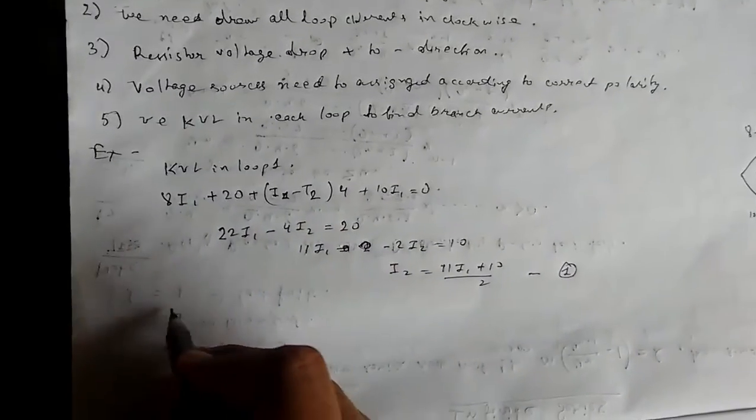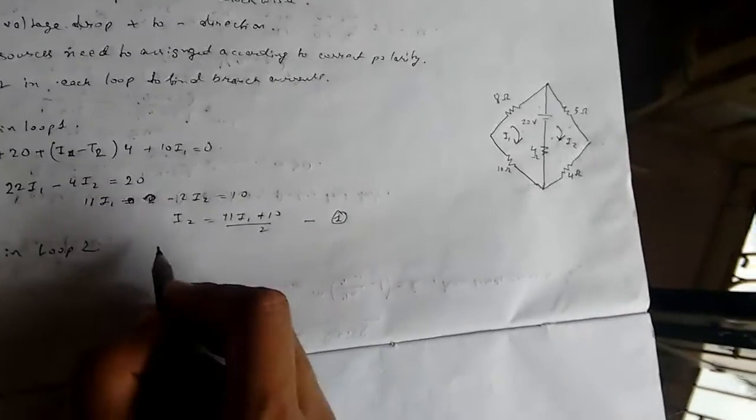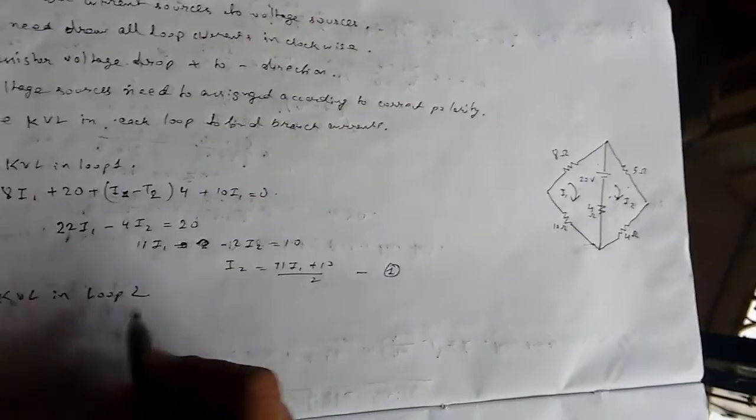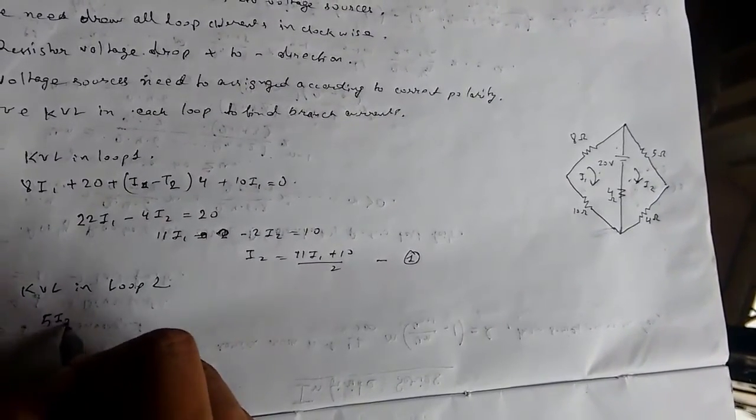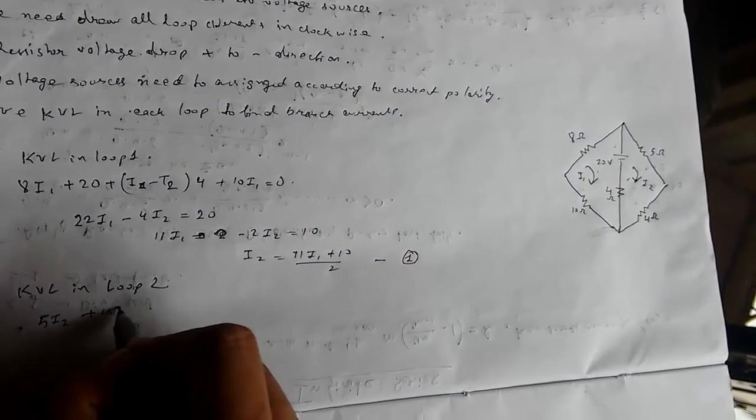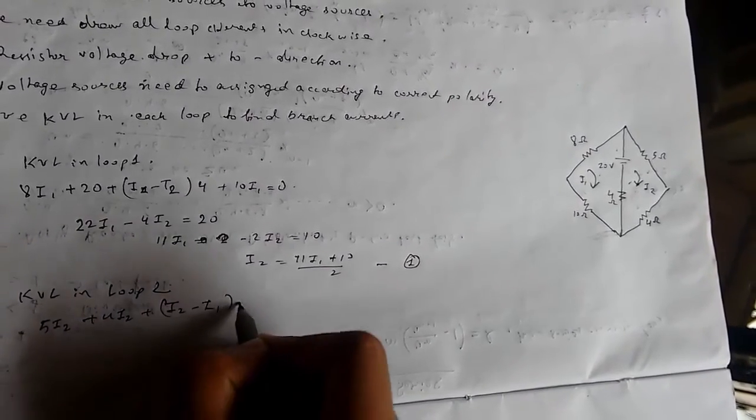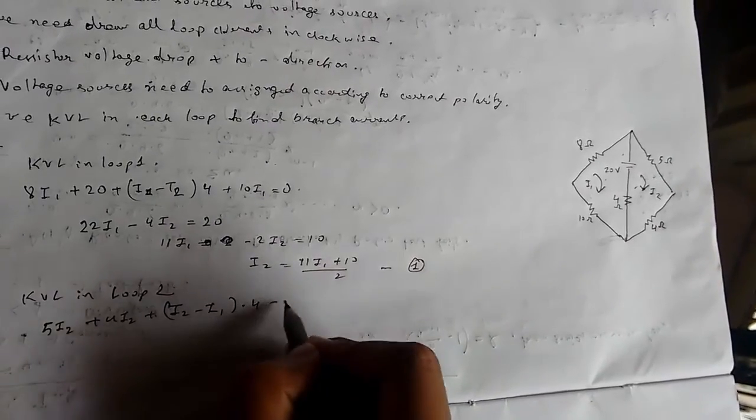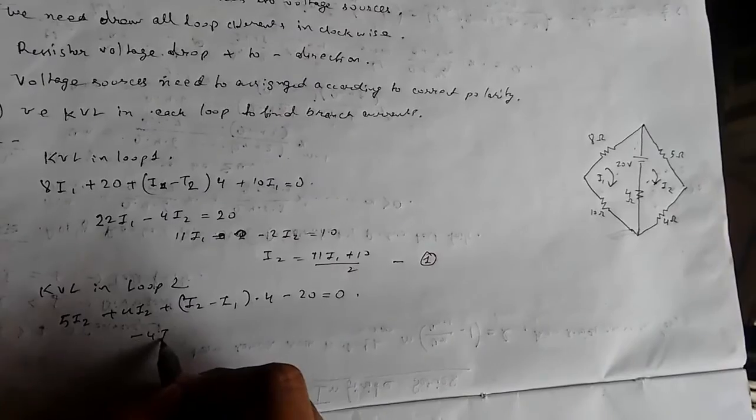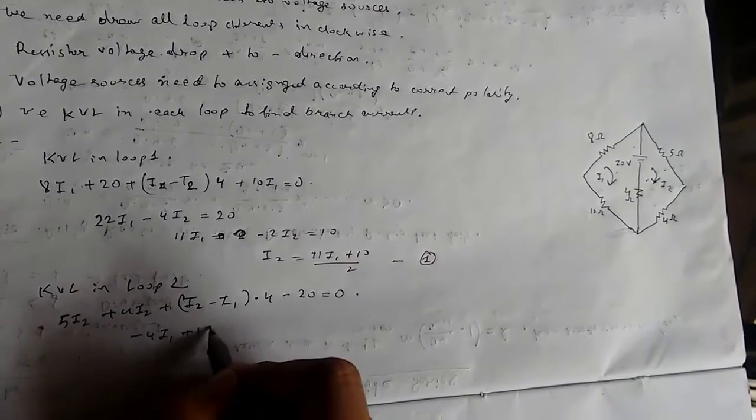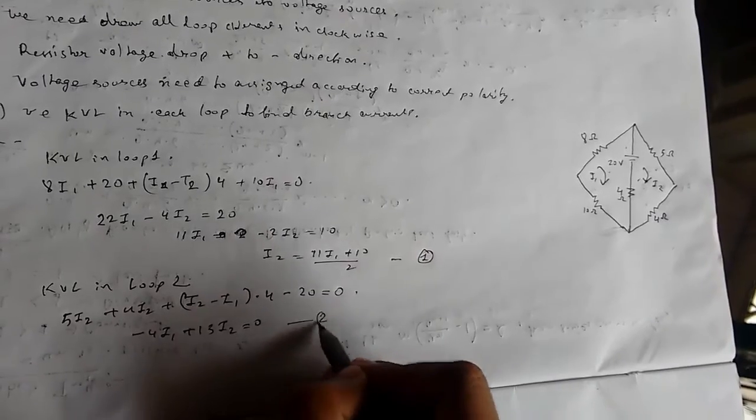Now applying KVL in loop 2. For loop 2, we get 5I2 + 4I2 + (I2 - I1) times 4 - 20 equals 0. So -4I1 + 13I2 equals 20. This is equation 2.